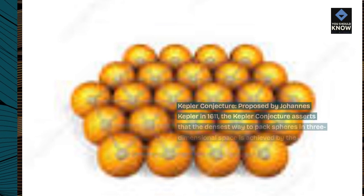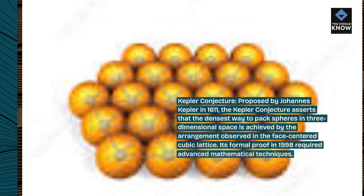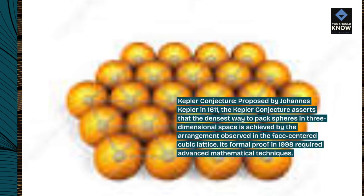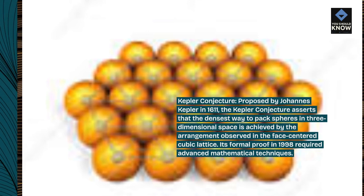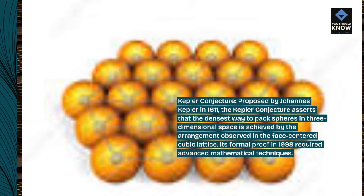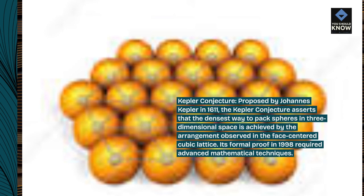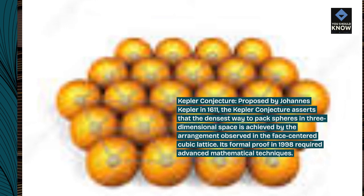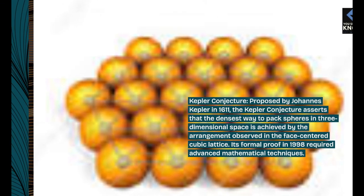Kepler Conjecture: Proposed by Johannes Kepler in 1611, the Kepler conjecture asserts that the densest way to pack spheres in three-dimensional space is achieved by the arrangement observed in the face-centered cubic lattice. Its formal proof in 1998 required advanced mathematical techniques.